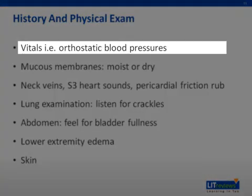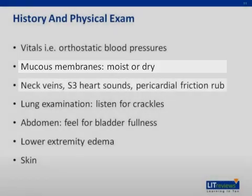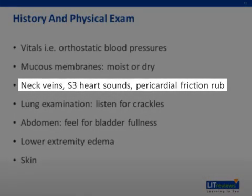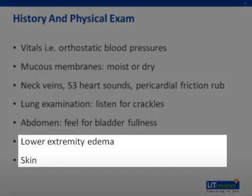Review the vital signs carefully — orthostatic hypotension may suggest hypovolemia. Look in the patient's mouth to determine if the mucous membranes are moist, as dry mucous membranes also reflect volume depletion. Assess the neck veins to aid in determining volume status; elevated neck veins suggest volume overload. Listen for an S3 sound or a pericardial friction rub, as a friction rub could be a sign of uremic pericarditis. Examine the abdomen for bladder fullness and check for lower extremity edema and skin turgor to further assess volume status.